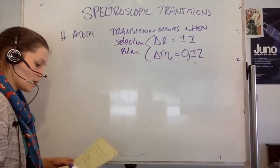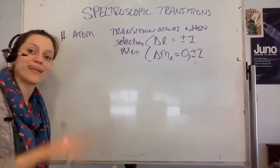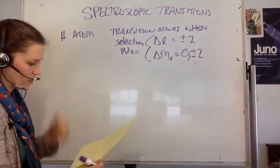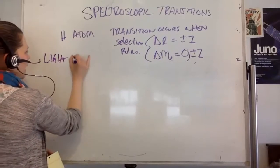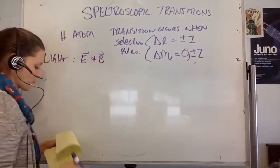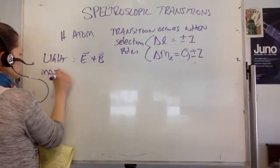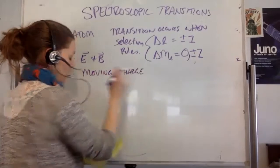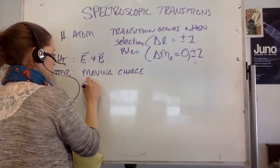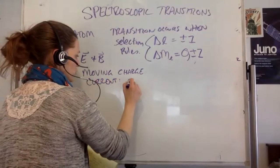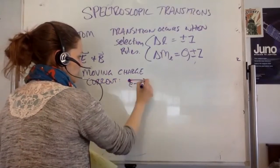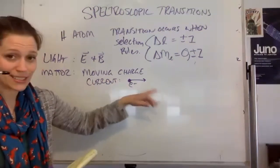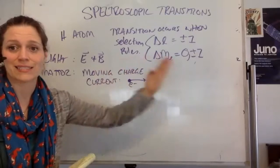If this happens — if you're changing quantum numbers — the transition is allowed. If it doesn't happen, it is not allowed. But how do we know this? This is where quantum comes in. Light has an electric field and a magnetic field. Matter is an oscillating or moving charge — by matter I mean an electron, which means it has a current. If the charge moves, it has a current associated with it, and because it has a current, it's got a charge moving across a distance. That means it has a dipole that is changing.